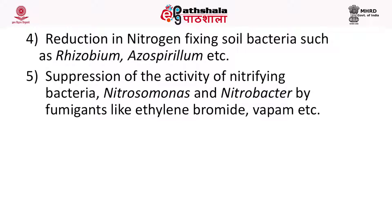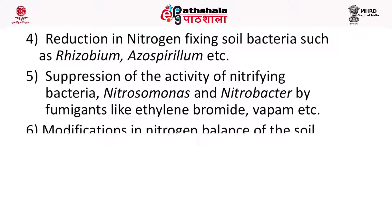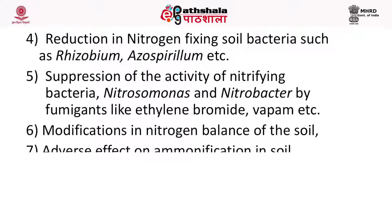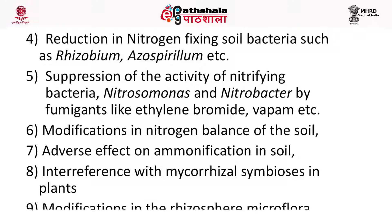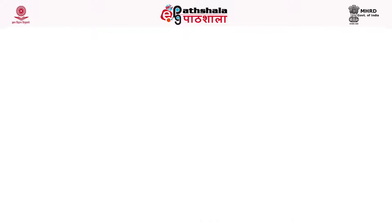There is also suppression of the activity of nitrifying bacteria such as Nitrosomonas and Nitrobacter by fumigants like ethylene bromide and Vapam. Other effects include modification in nitrogen balance of the soil, adverse effect on ammonification in the soil, interference with mycorrhizal symbiosis in plants, and modification in the rhizosphere micro-flora.